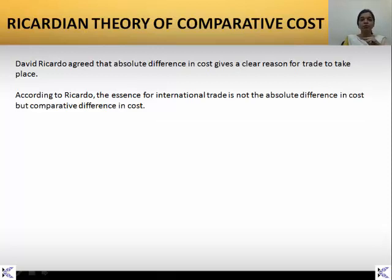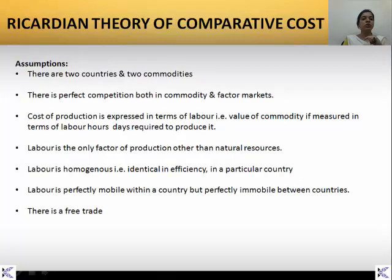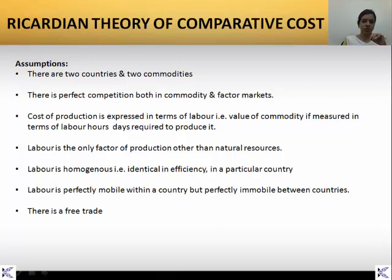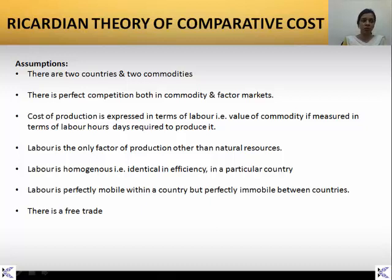The next part is where we talk about the assumptions. There are two countries which are assumed, and only two commodities produced by the two countries. There is perfect competition between the commodity and the factor markets, which means the cost of production is expressed in terms of labour — the commodity is measured in terms of labour hours required to produce the product.